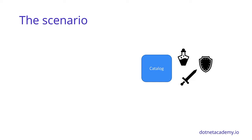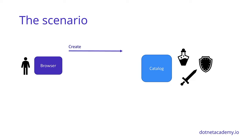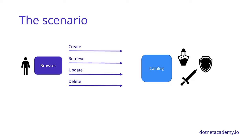So that's a system we have in place — it has a catalog. We're going to have users who would like to manage this catalog via their browser. They want to be able to create items in the catalog, retrieve the list of items currently available, update properties of items, and delete items from the catalog.